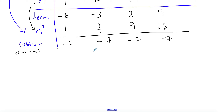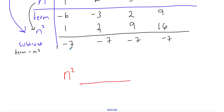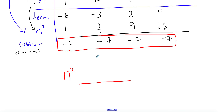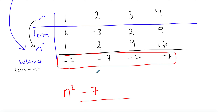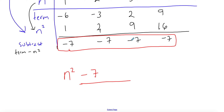You notice you're getting a constant number in the subtraction row. If the subtraction row is a constant, you simply add it to the formula in front: what we have so far is n squared, and since the constant is negative 7, the formula becomes n squared minus 7. You can check: 1 squared minus 7 is negative 6, 2 squared minus 7 is negative 3, 3 squared minus 7 is 2, and 4 squared minus 7 is 9. All correct.